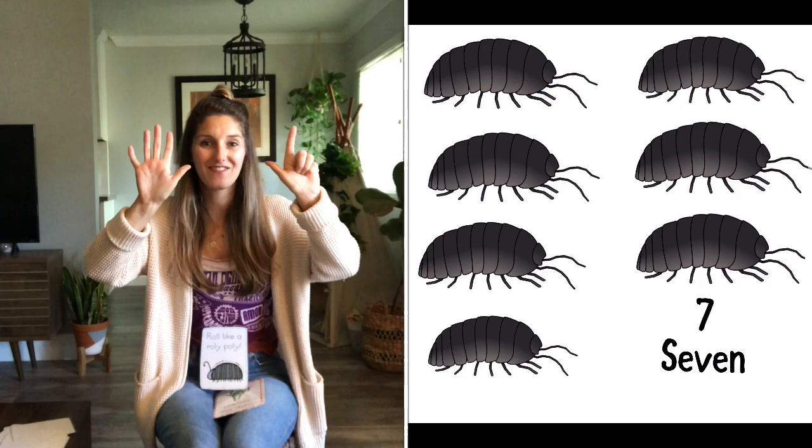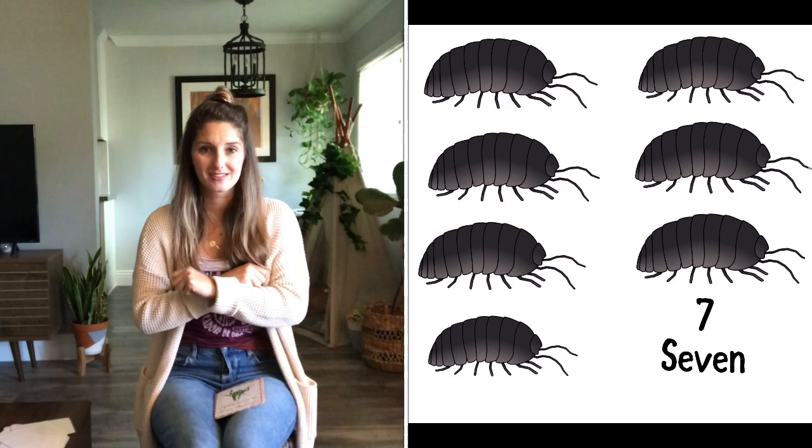Seven roly-polies. That means we get to roll our arms seven times. Here we go. One, two, three, four, five, six, seven. Great rolling.